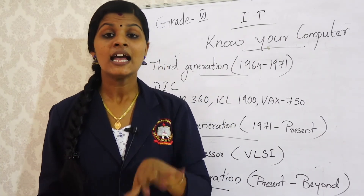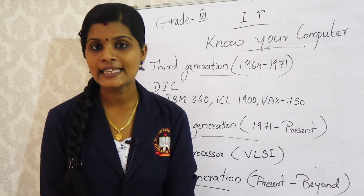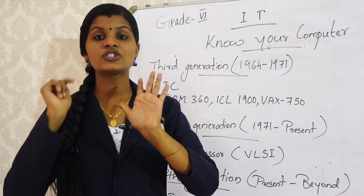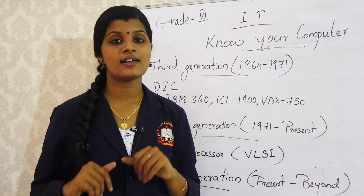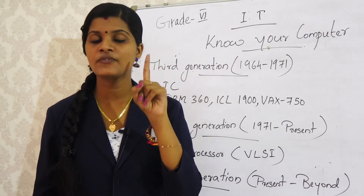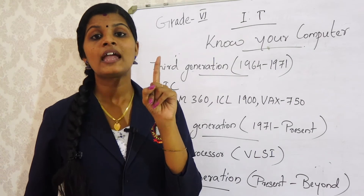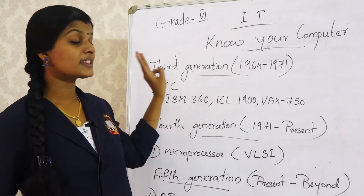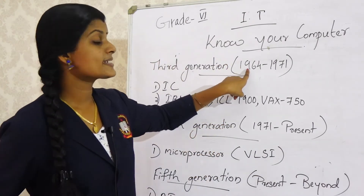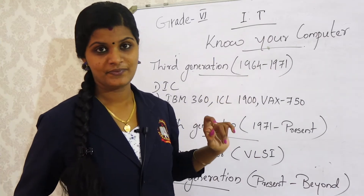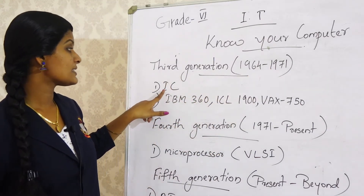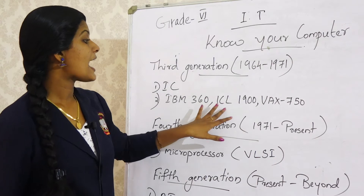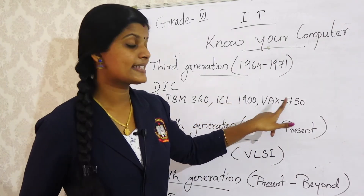Today in this second class, we have discussed three generations of computers. In total there are five generations. First generation used vacuum tubes, second generation used transistors — both discussed in the first class. Today we covered the third generation: year 1964–1971, main component integrated circuit, examples IBM 360, ICL-1900, and VAX-750.